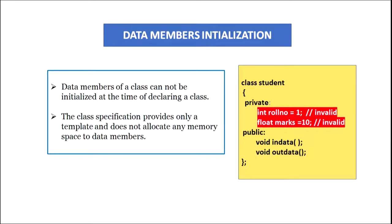We have already learnt that initialization of variables is must before using them because otherwise they may contain garbage value. Similarly, initialization of data members is also essential. The problem with a class is that at the time of declaring it we cannot assign any initial value to its data members, as the class specification only provides a template and does not allocate any memory space. The necessary memory space is allocated only when the object of the class is created.